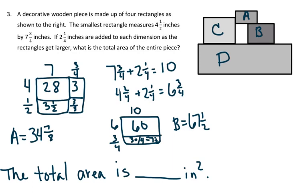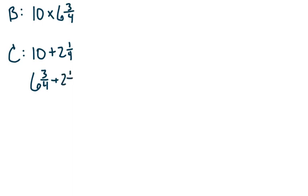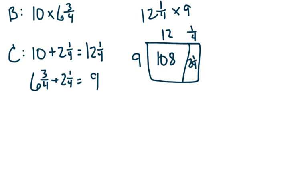Let's work on C and D. The dimensions for B were ten by six-and-three-fourths, and we're going to add two-and-one-fourth to each. For C: ten plus two-and-one-fourth, and six-and-three-fourths plus two-and-one-fourth. We have the dimensions of twelve-and-one-fourths by nine. When we do the area model, the areas of each of the rectangles total 108 and two-and-one-fourths, so C is going to be one-hundred-ten-and-one-fourths.